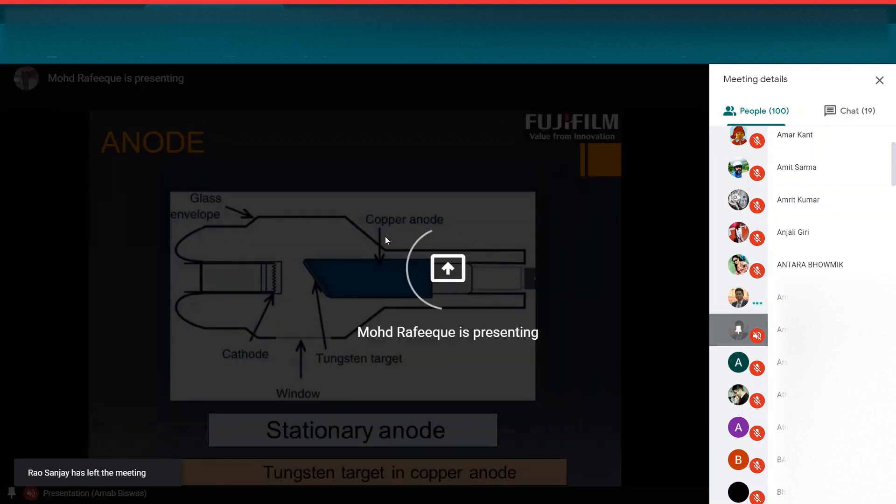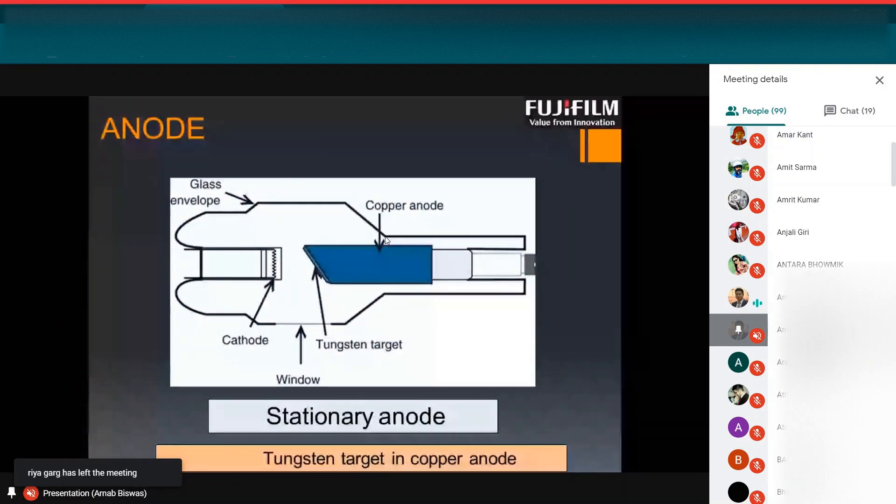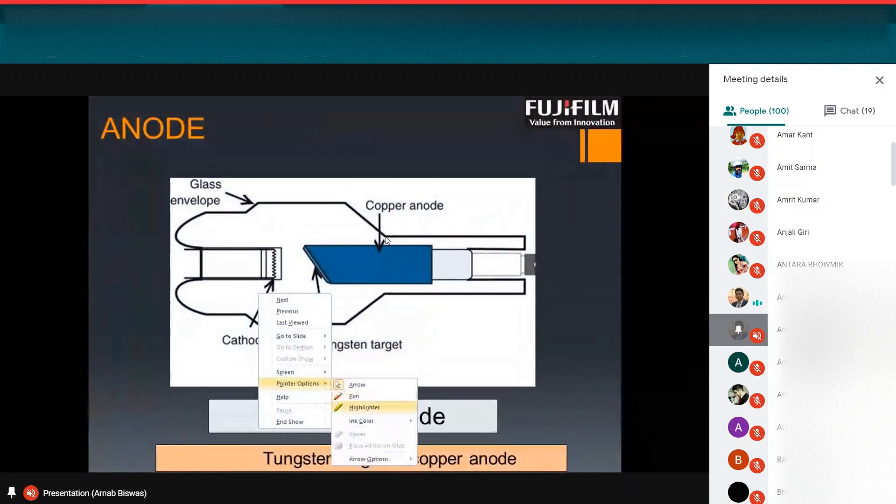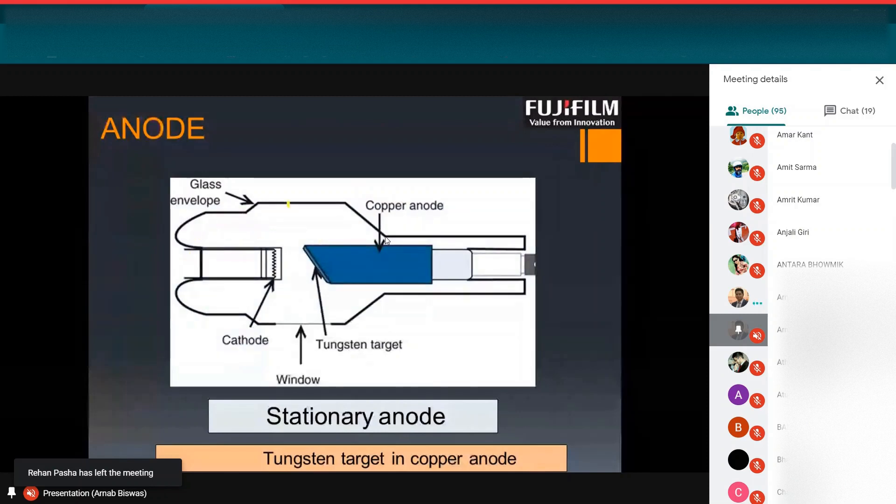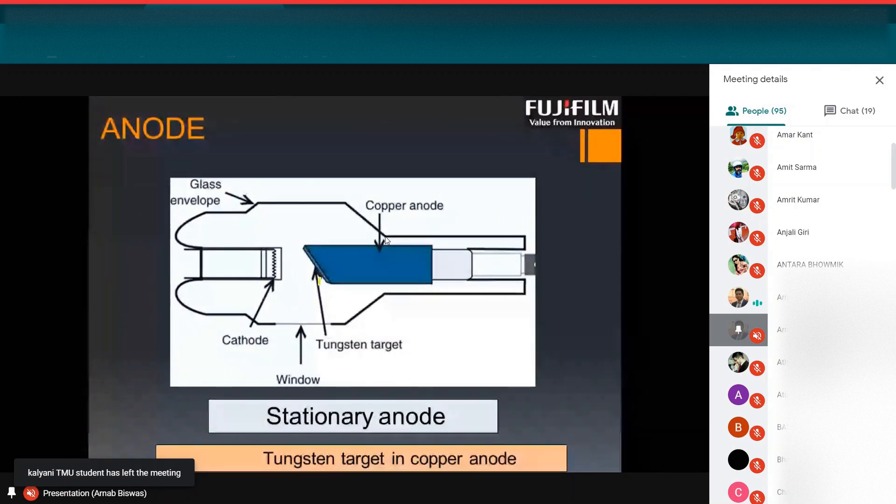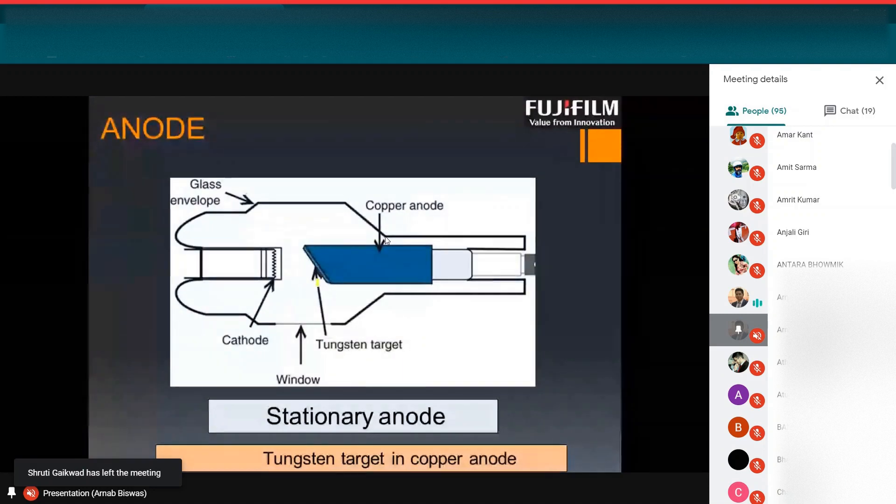In the stationary anode, one tungsten target is used where a copper shielding is placed behind this tungsten target. Cathode terminal is here. There is a window where X-ray beam will flow from there in this window. This is the envelope, glass envelope. And this is a copper anode. Why copper is used behind the tungsten target? Because in stationary anode to dissipate that heat, we use copper. Copper can transfer the heat to the outer side. So to increase the life expectancy of that tungsten target, we use copper as an outer shell.